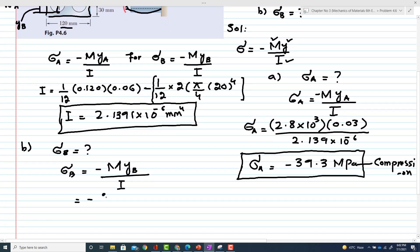So again, -2.8 × 10³ multiplied by Y, which is -0.02 (because it is downward), divided by I, which is 2.139 × 10⁻⁶.